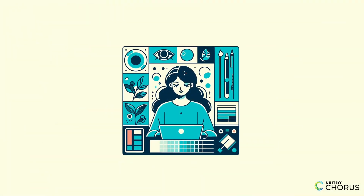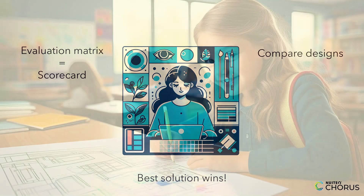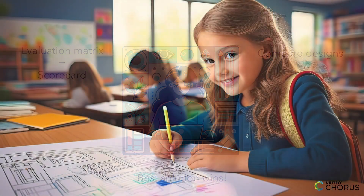So, that's how it's done. Evaluating design solutions with a systematic process ensures we make the best choices. Today, you've learned how to use an evaluation matrix to compare designs. Keep this in mind as you work on your own projects — it's the secret sauce to engineering success. Now, get ready to apply what you've learned and make those designs shine.